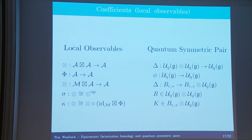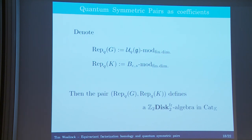That means the pair (rep QG, rep QK) is exactly the type of data of a Z2 disk algebra in categories. In particular, this means we obtain invariants of two-dimensional orbifold surfaces by integrating this Z2 disk algebra. The question is: what do we get?